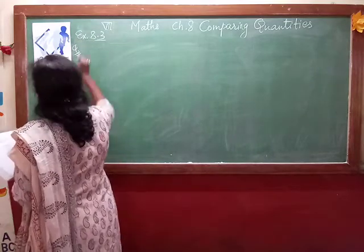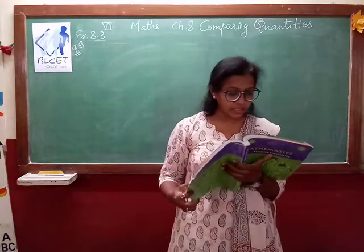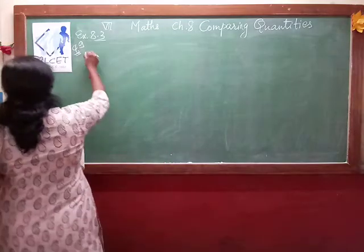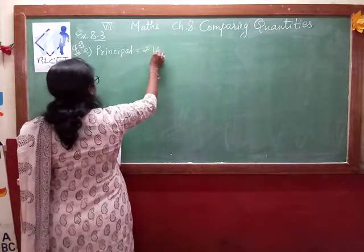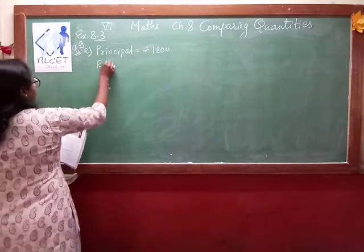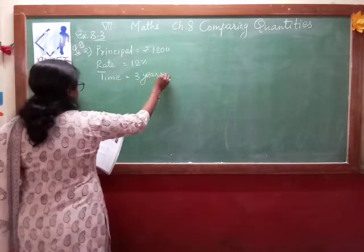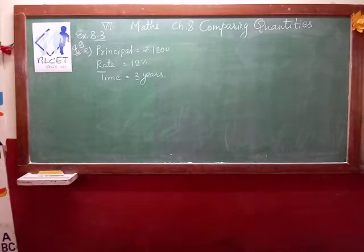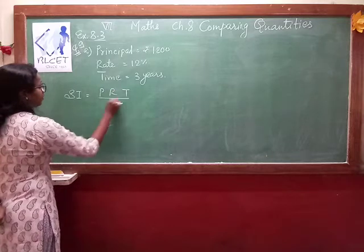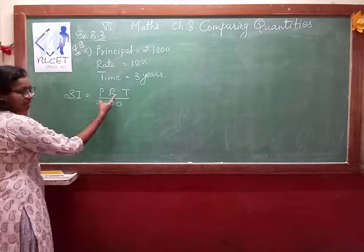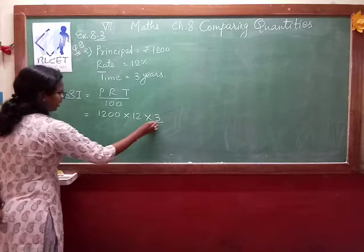Question number 9. Find the amount to be paid at the end of 3 years in each case. What is given? Principal is equal to 1200, rate of interest is equal to 12 percent, and time duration is 3 years. Here we want to find the amount. Before we find the amount, we have to find the simple interest. Simple interest equals P times R times T divided by 100. P is your principal, R is rate of interest.